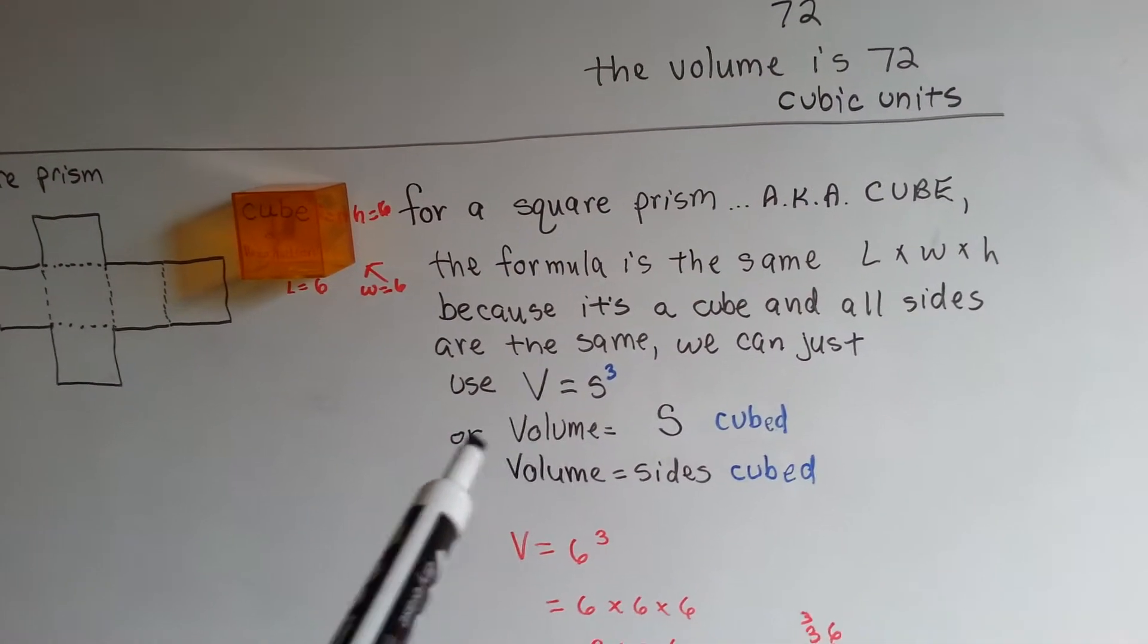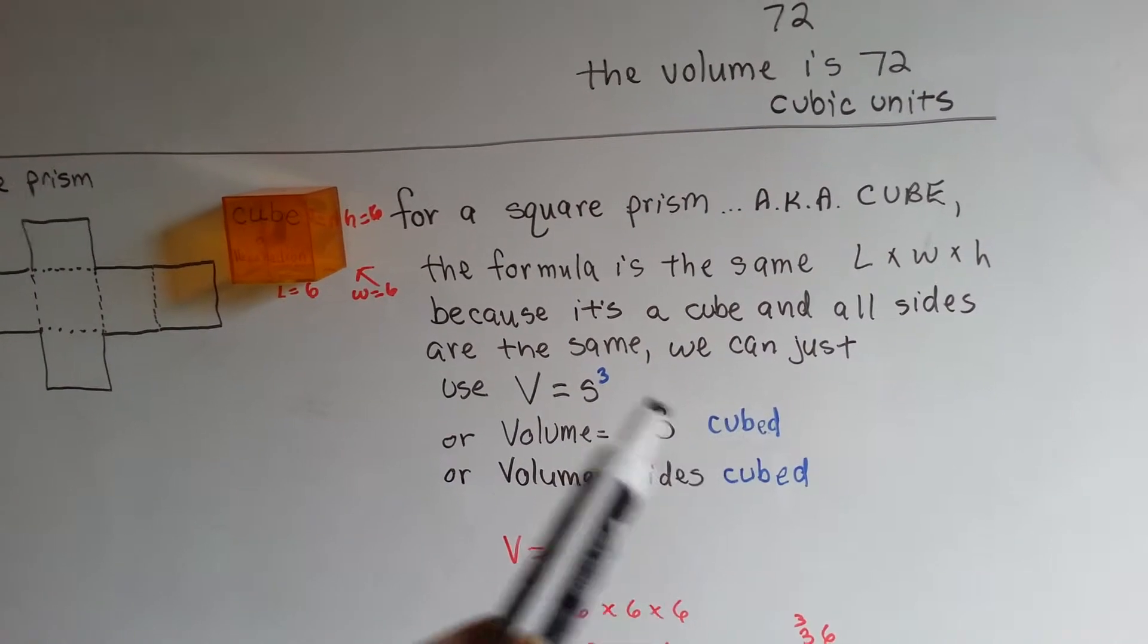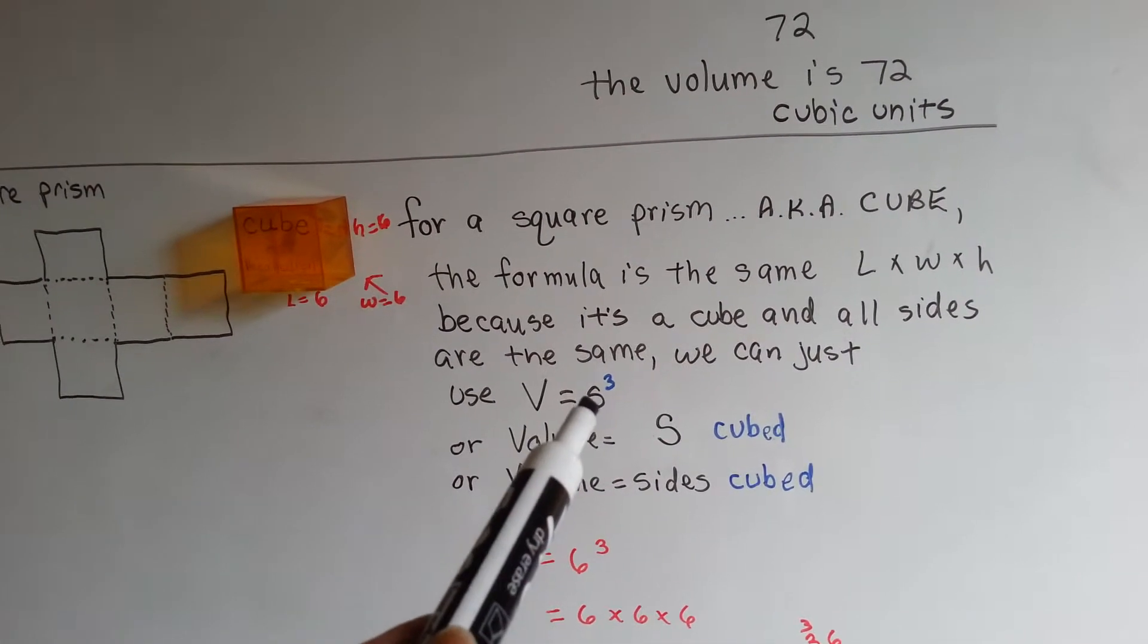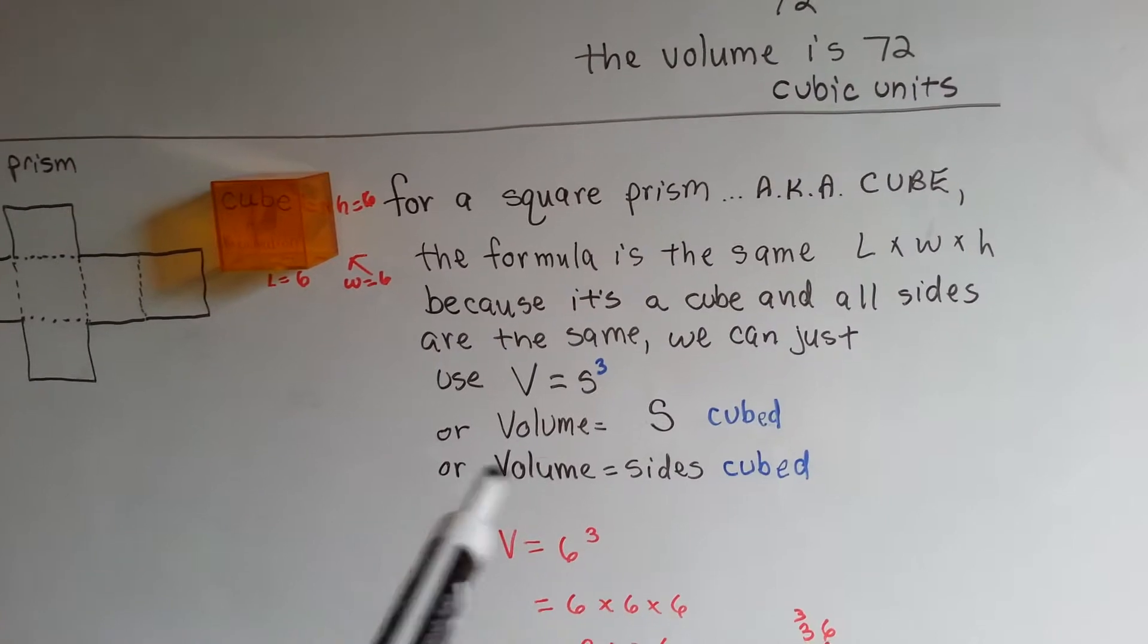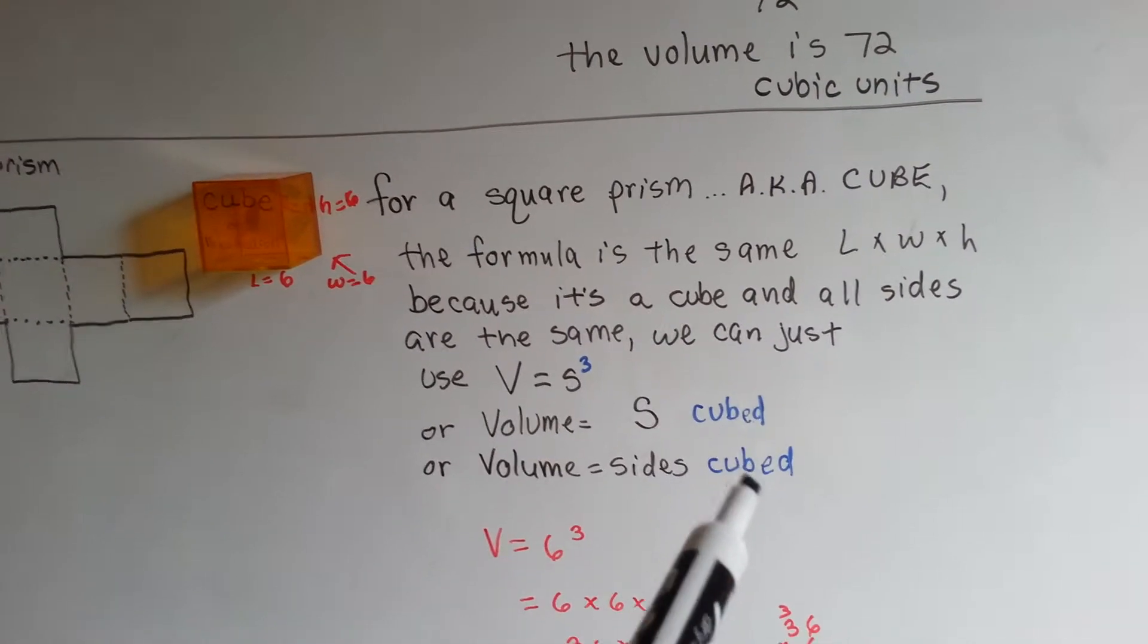Volume equals S cubed. That's how you would read that. S cubed. Or, volume equals the sides cubed.